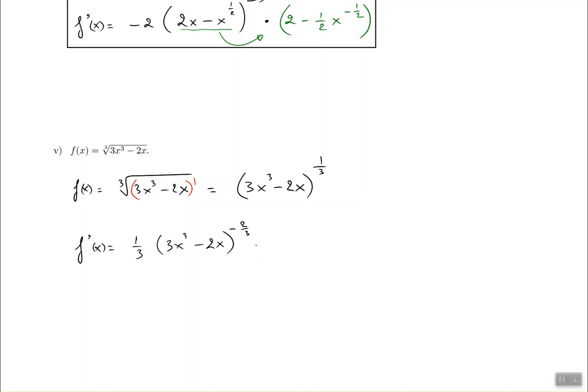Then multiply by the derivative of all of these things. The derivative of them is going to be next. So it's going to be 9x to the power of 2 minus 2.